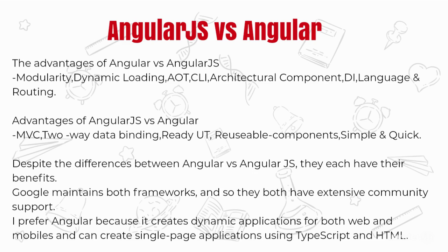For AngularJS advantages: the MVC model speeds up application development, two-way binding is available, and POJO models can be interfaced with fewer lines of code. Unit testing is built in — the developer only has to code to find defects in the design. It is also very easy and quick to build web applications with simple lines of code since it is essentially a front-end HTML-based concept.